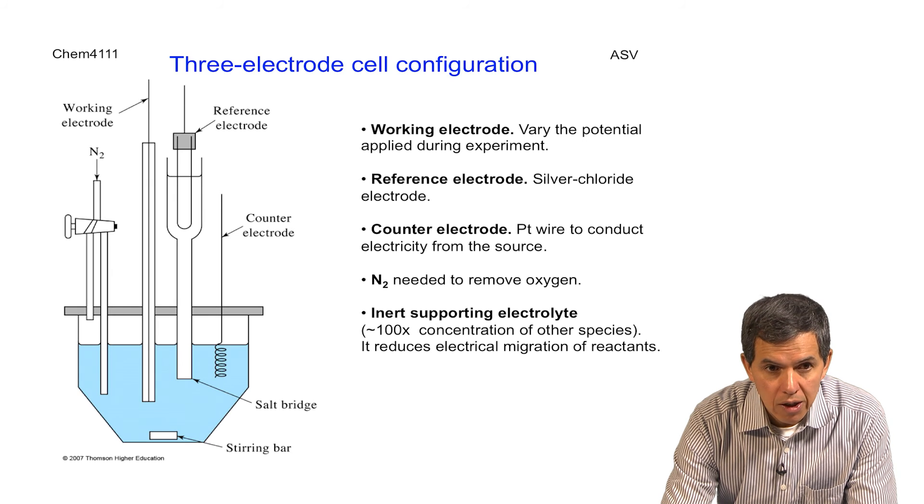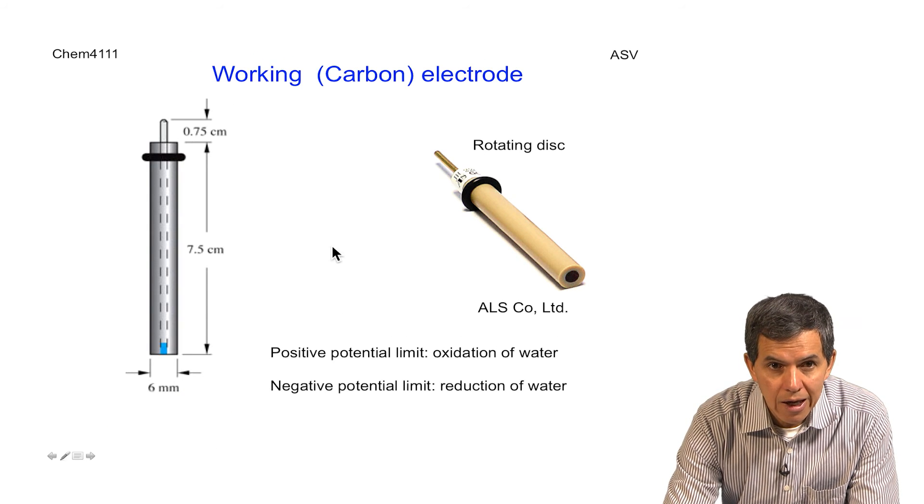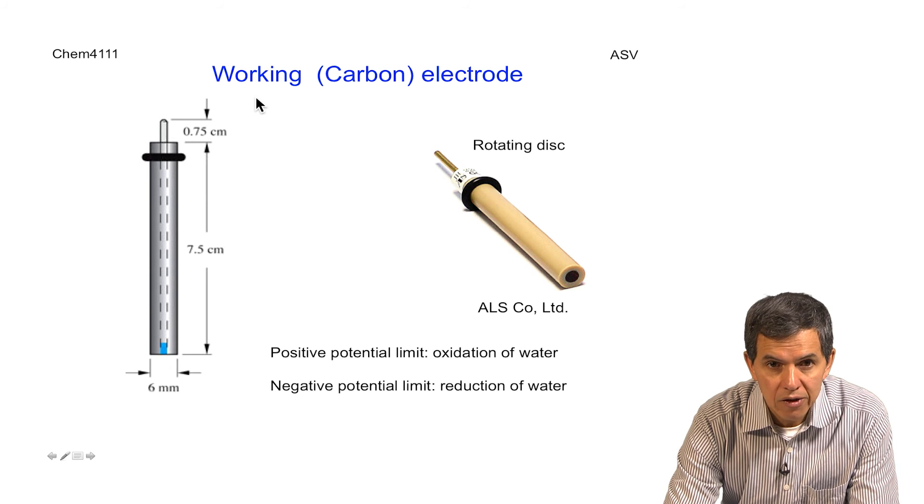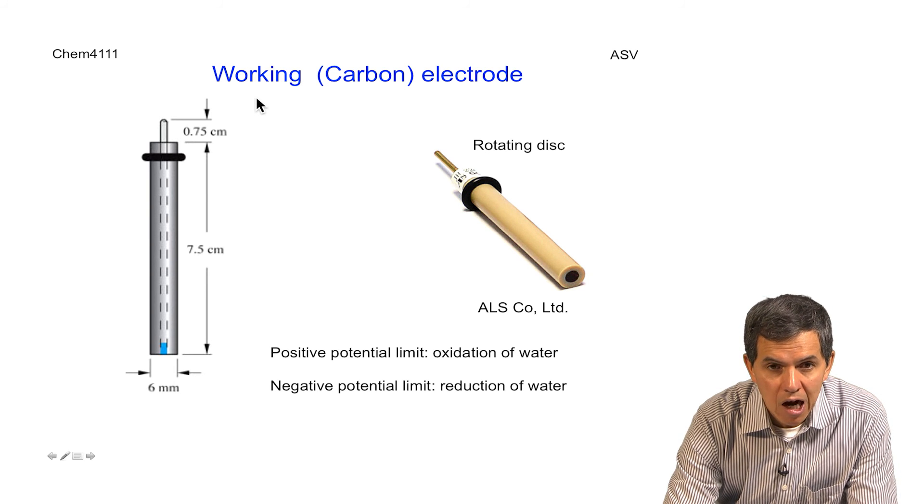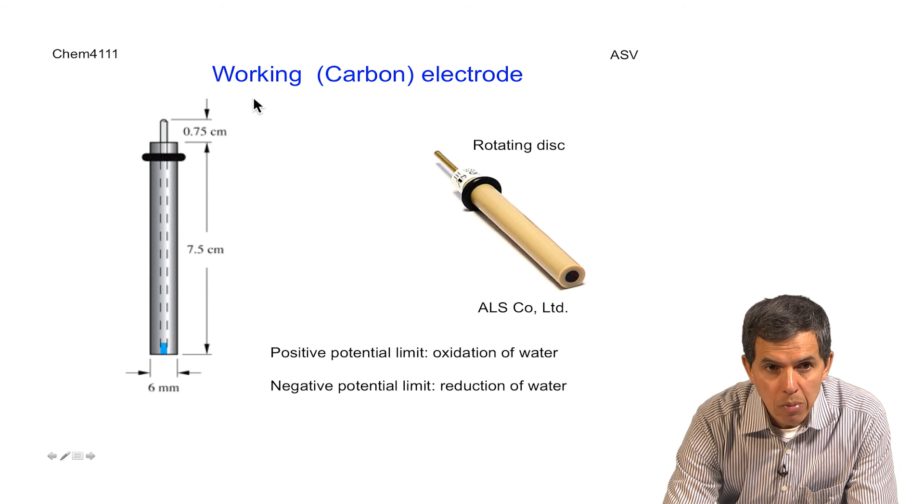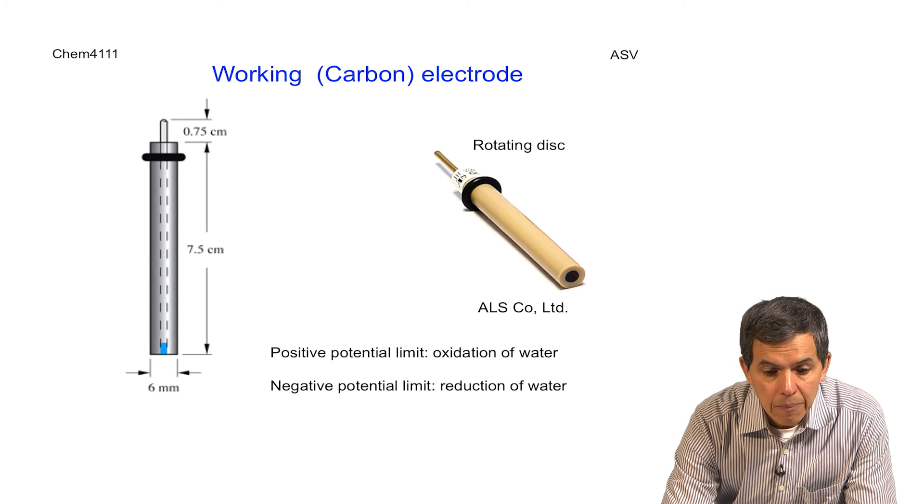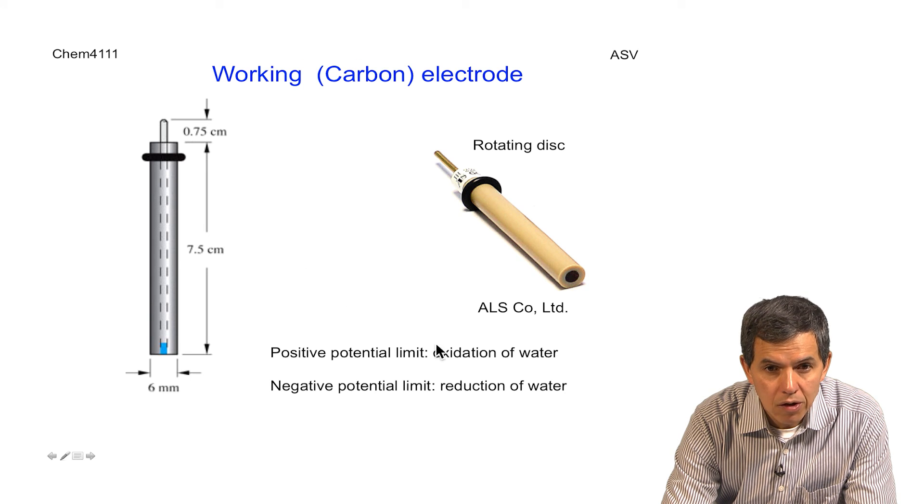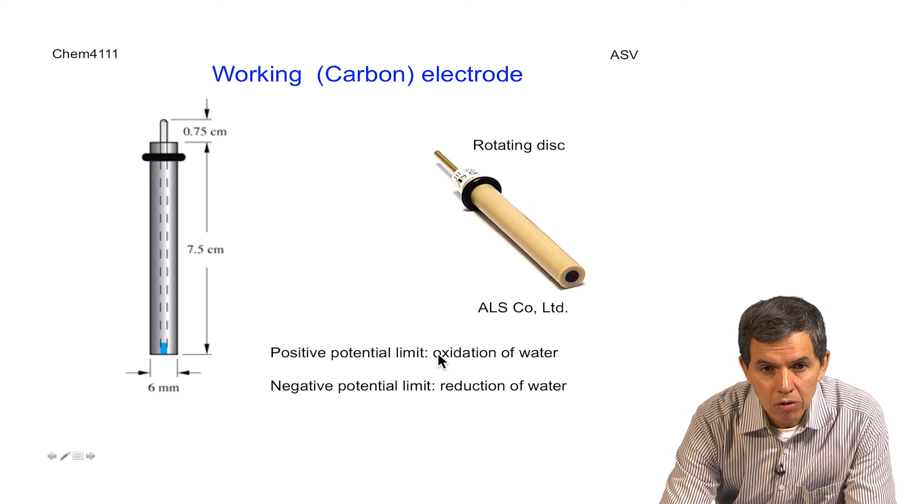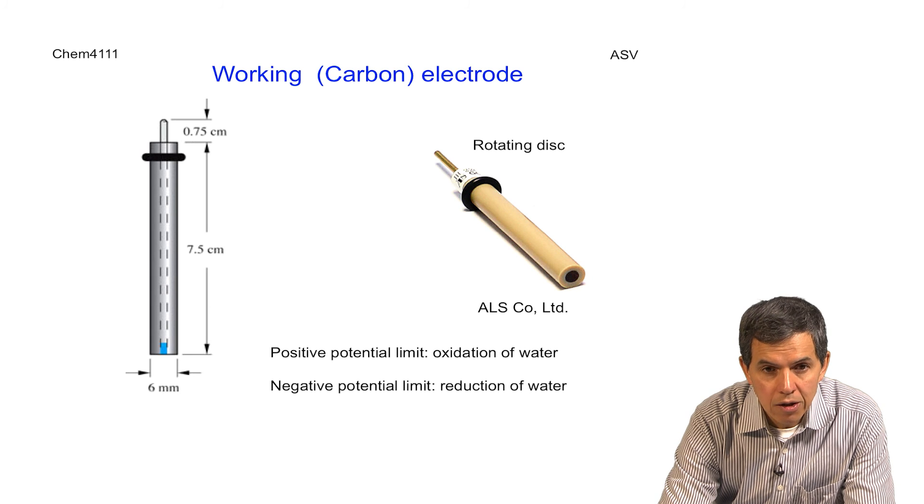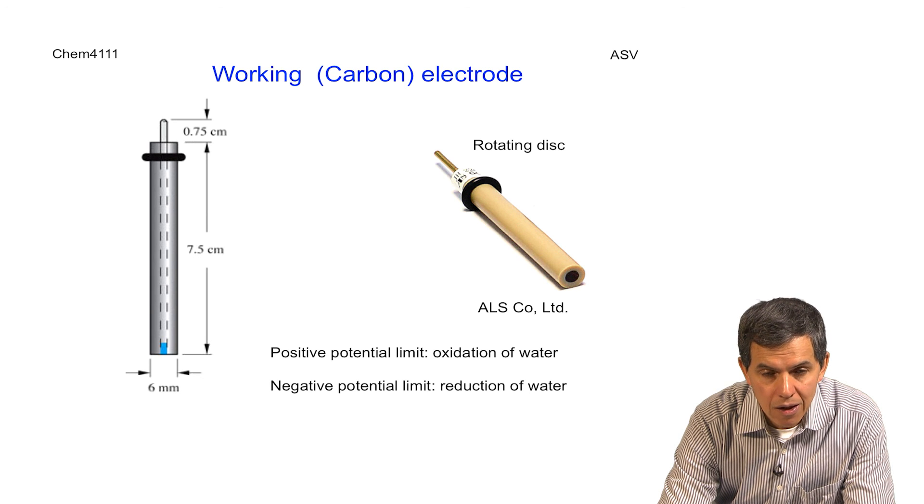And one more detail about this consists of describing the electrode, the working electrode that is used to do this type of analysis, which is typically a carbon electrode that has the capability of rotating very fast in solution, so that it decreases the size of the Stern layer. The typical voltages for this electrode are defined by the limits of the oxidation of water and the reduction of water. Any species that has a reduction potential within this range can be analyzed by ASV.